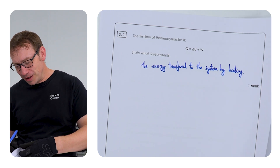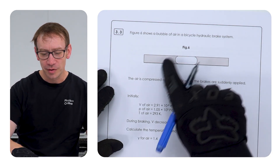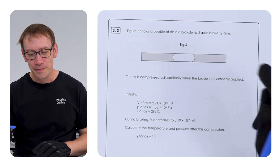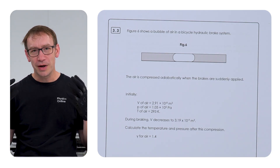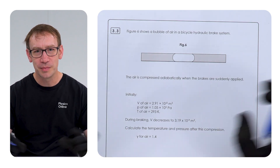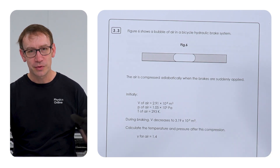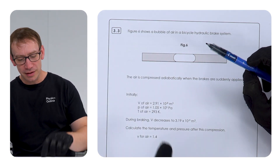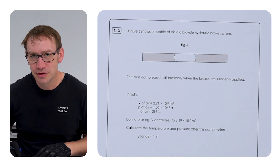The second question is where we're applying our current knowledge. We've got a diagram showing an air bubble inside a hydraulic brake line, with brake fluid on each side. Even if you don't know anything about bikes, we're essentially looking through the language to understand that we've got some gas which is being compressed. We have data about the initial conditions for volume, pressure and temperature, and during the braking process the volume decreases to a new value — we just need to calculate the new temperature and pressure. This question has three AO2 marks available.